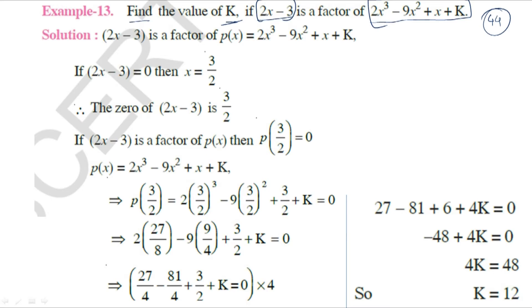We need to find the value of K. If (2x - 3) is a factor of the polynomial, the remainder will be 0. Let's call the polynomial P(x). When we divide P(x) by (2x - 3), the remainder is 0.